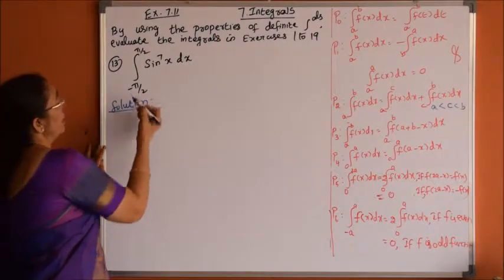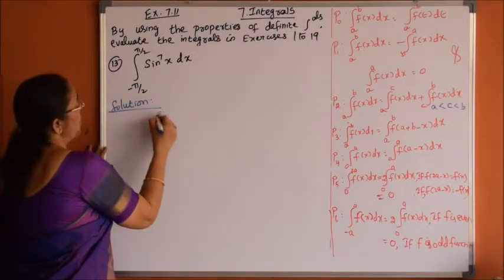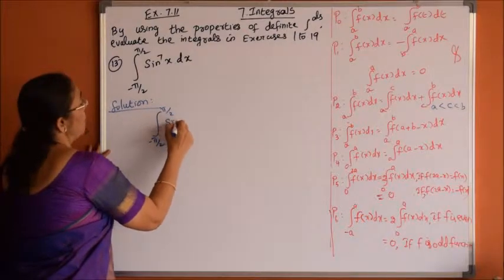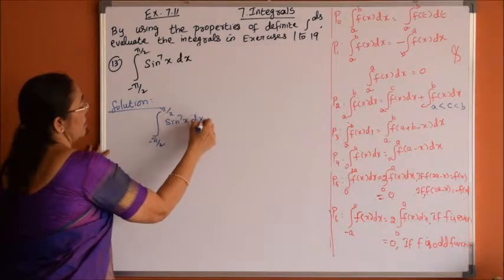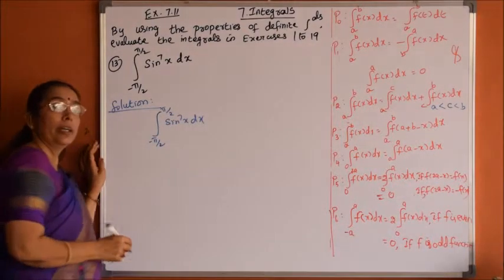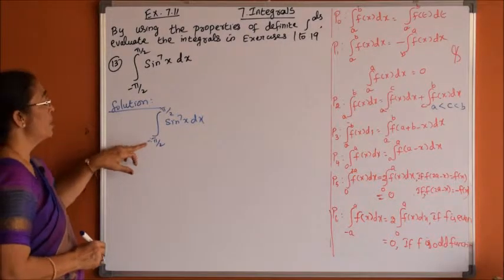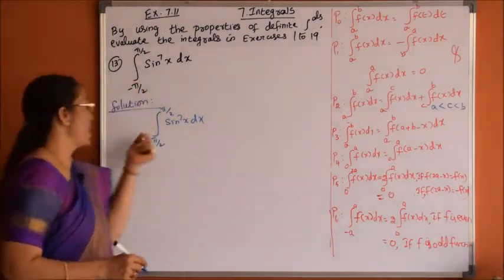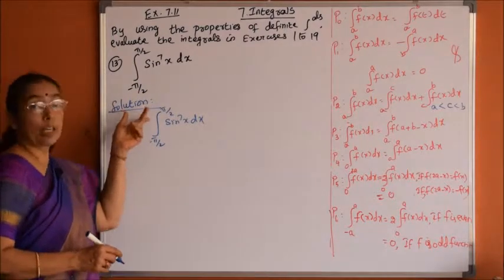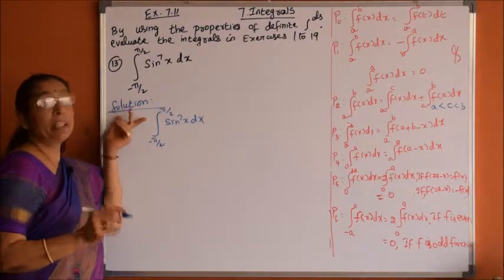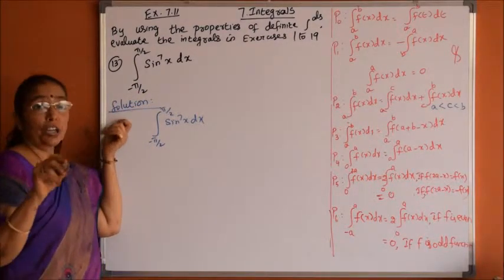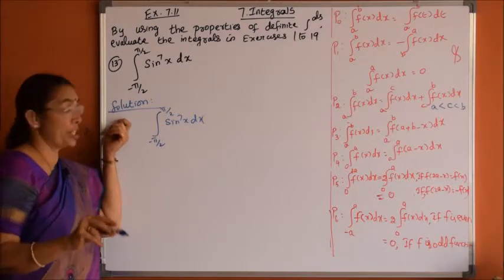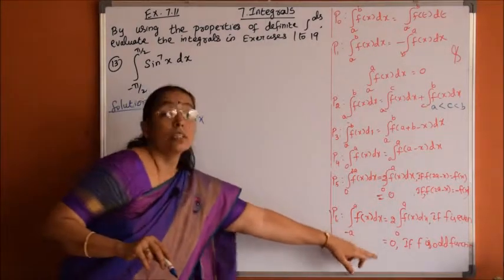Problem 13: integration of sin to the power 7x dx from minus pi by 2 to pi by 2. Whenever the limits are in the form minus a to plus a, check whether the given function is odd or even, because if it is an odd function we can write directly the answer as 0.